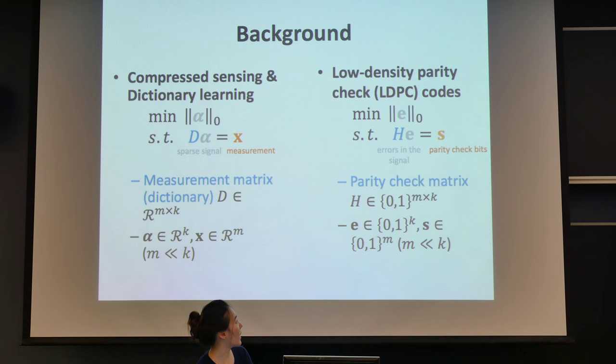And here, H is a parity check matrix, and S is a parity check base, which a transmitter is sending to the receiver. And the receiver wants to get E to detect if there's any errors in the signal. So as you can see, these two problems look really similar.